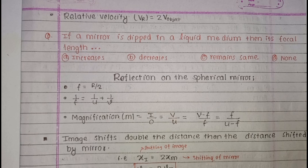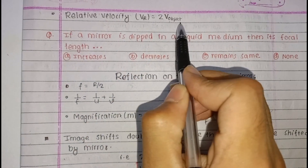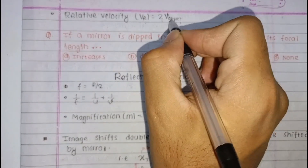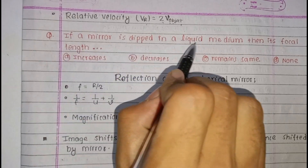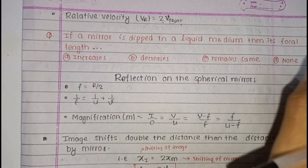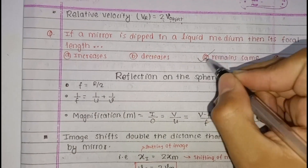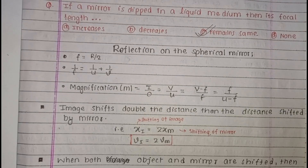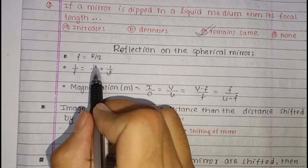The relative velocity of the image with respect to the object is twice the velocity of the object. If a mirror is dipped in a liquid medium, its focal length does not change, because reflection on a spherical mirror gives f equal to R by 2.